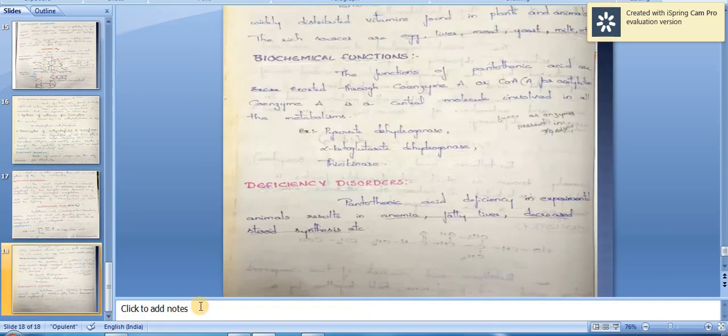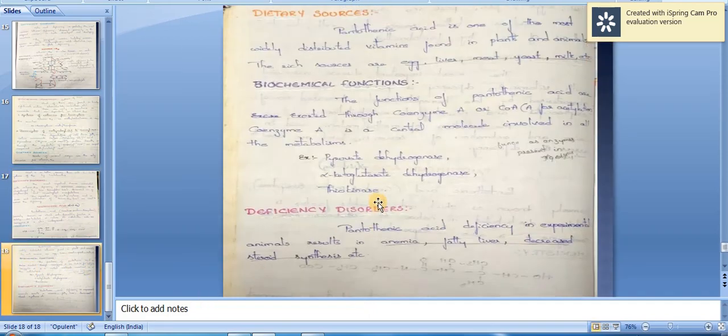Dietary sources of pantothenic acid: pantothenic acid is one of the most widely distributed vitamins found in plants and animals. The rich sources are egg, liver, meat, yeast, and milk.